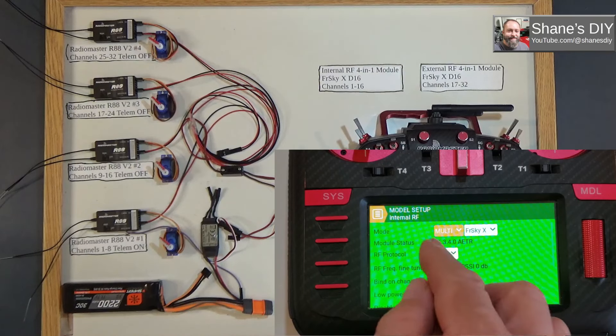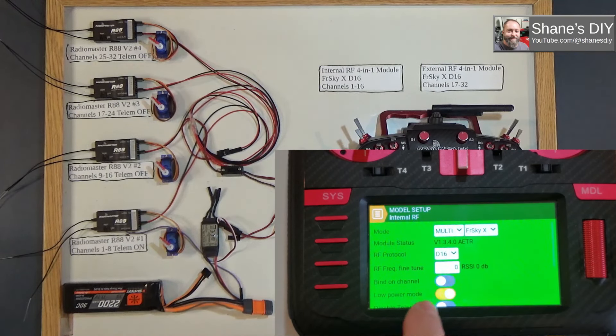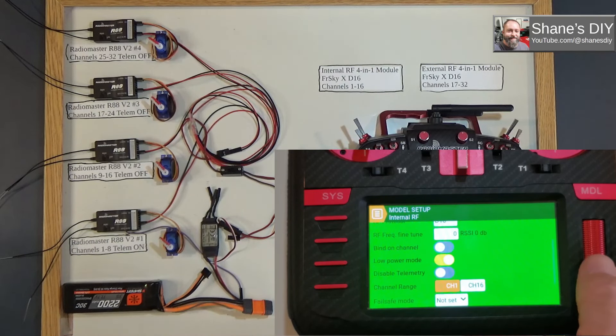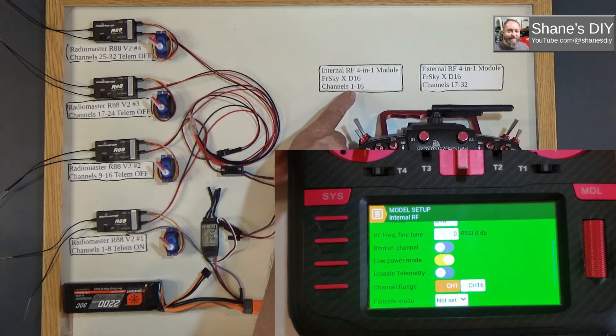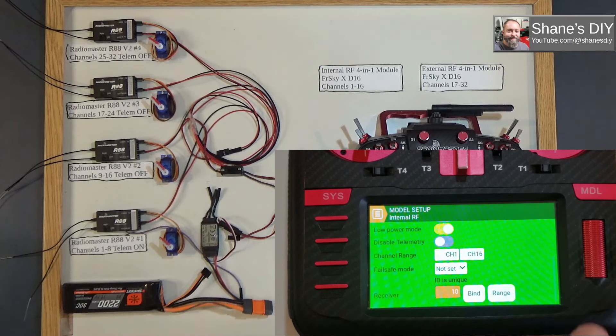I'm setting the FRSky X protocol D16. You'd need to go do your fine tuning and stuff, I'm not going to worry about it for this demonstration. I do have this set for low power mode just because I've got the transmitter so close to the receivers. It'll complain about that because you get signal swamping. Just go down for your first, for your internal module, you want it set for a channel range of 1 to 16. This is what I'm showing up here, channels 1 to 16. I'm using receiver 10, ID 10, because that's unique to my radio.